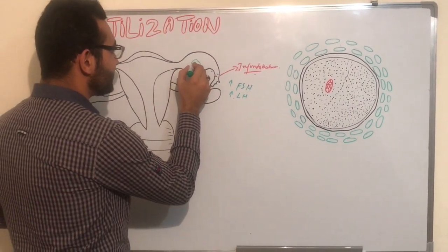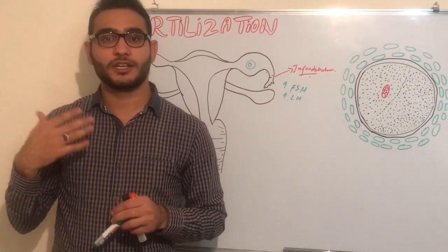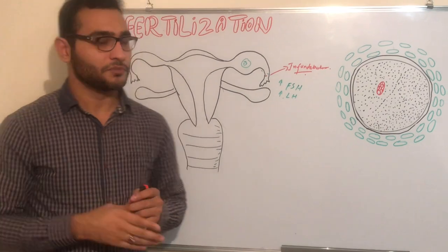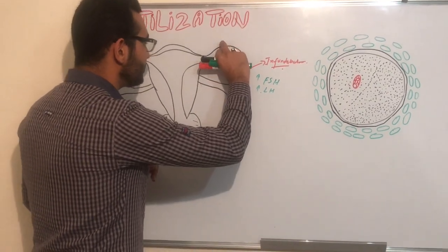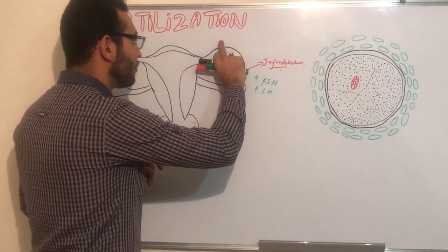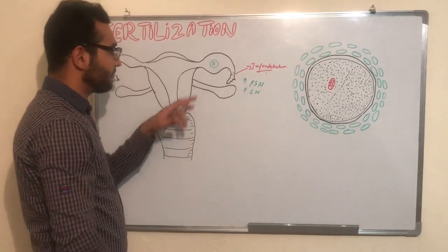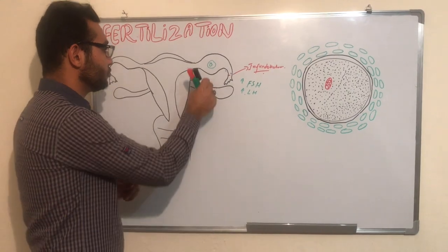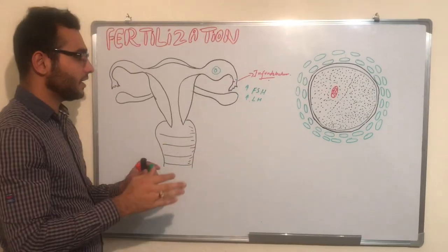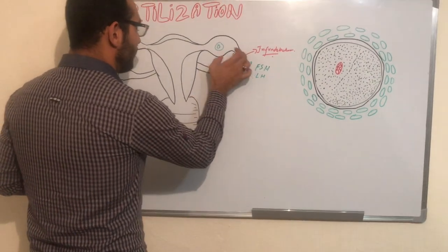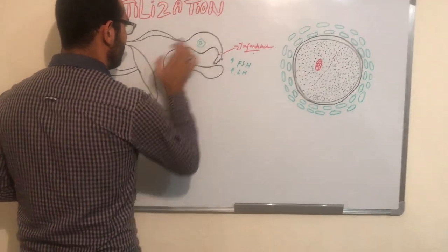Why does fertilization occur at the ampulla region of the fallopian tube? The reason is that this region is wide and broad, which facilitates fertilization. This was the mechanism by which the ovum reaches the site of fertilization — the ampulla.